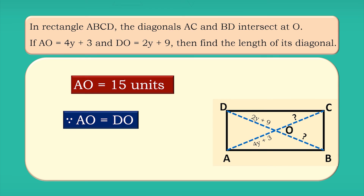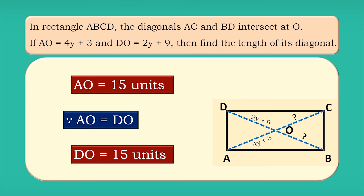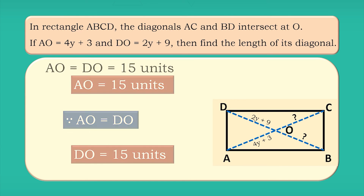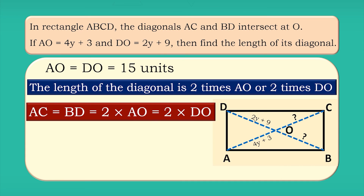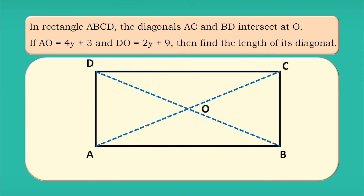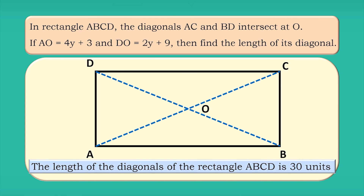Since AO equals DO, DO is also 15 units. The length of the diagonal is 2 times AO or 2 times DO. So AC = BD = 2 × AO = 2 × DO = 2 × 15 = 30 units. Therefore, the length of the diagonals of rectangle ABCD is 30 units.